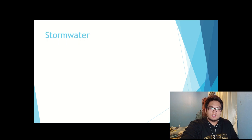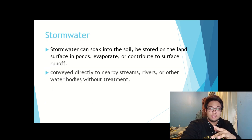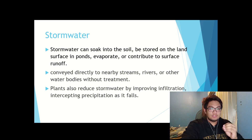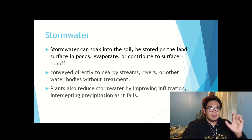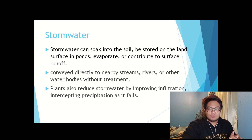For storm water, it is originated from rain, including snow and ice. The storm water can soak into the soil, be stored on the land surface in ponds and puddles, evaporate, and contribute to surface run-off. Most run-off is conveyed directly to nearby streams, rivers, or other water bodies without treatment.